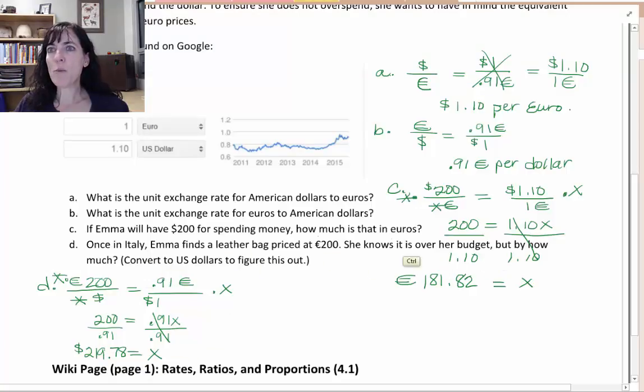And then I look back, what was my actual question? How much is she over budget by? So her budget was two hundred dollars, and if she buys this purse that's two hundred euros, then she will be nineteen dollars and seventy eight cents over budget. I just subtracted off the two hundred.